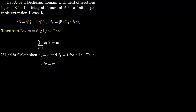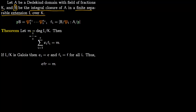In this lecture we want to relate the Galois group with ramification. Let A be a Dedekind domain with field of fractions K. Since A is a Dedekind domain it is integrally closed. We are going to talk about the integral closure of A in some extension — specifically, let B be the integral closure of A in a finite separable extension L over K.